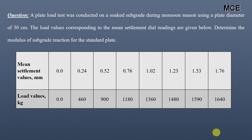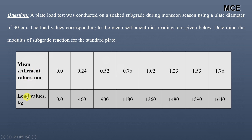Hello and welcome back to Master Civil Engineering. In this video you will learn how to find the modulus of subgrade reaction for the standard plate from load-settlement curve data of a plate load test. A plate load test was conducted on a soaked subgrade during monsoon season using a plate diameter of 30 centimeters. The load values corresponding to the mean settlement dial readings are given, with mean settlement values in mm and corresponding load values in kg.